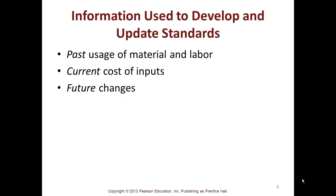The information used to develop and update standards includes past usage of material and labor — which could be one month, one week, or one year depending on what you're producing — as well as current cost of inputs and future changes. This chapter focuses on manufacturing, but these concepts can be used in any kind of service line where you're looking at cost.